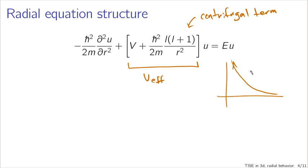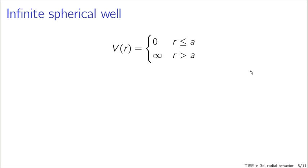Otherwise this is exactly the same as our one-dimensional time-independent Schrödinger equation. As an example, consider the infinite spherical well — instead of the infinite square well, let's do this in spherical coordinates. Our radial equation now has a relatively simple potential V(r): for particles less than a certain radius from the origin, the potential is zero, and outside the well the potential is infinity — the same structure we had for the particle in a box in one dimension.